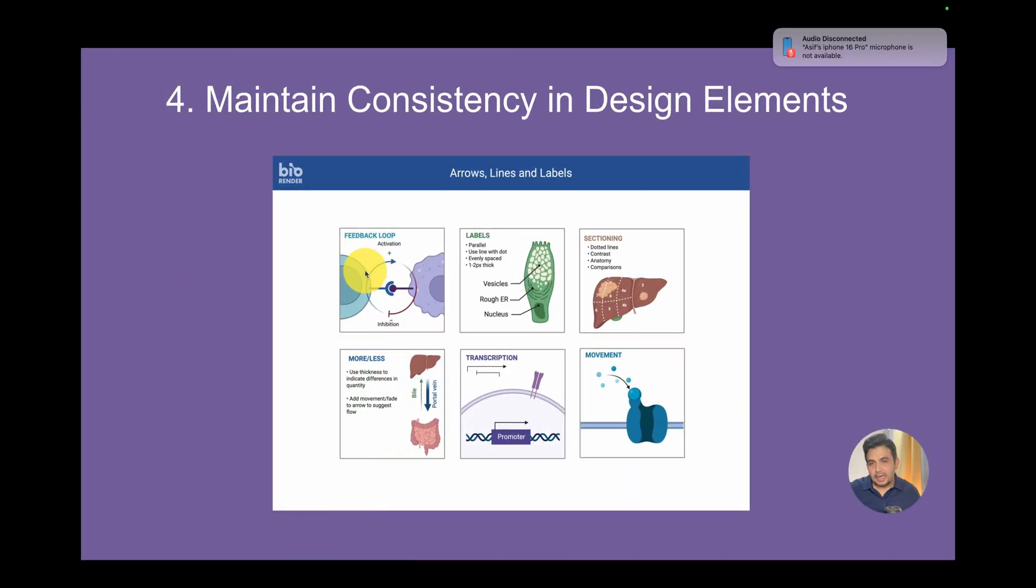The fourth one is to ensure consistency in arrows, lines, text, and labels. For example, use the same arrow type to show direction and apply one labeling style across all the design. This consistency will make your abstract easier to follow and look professional.